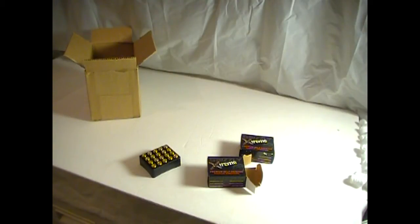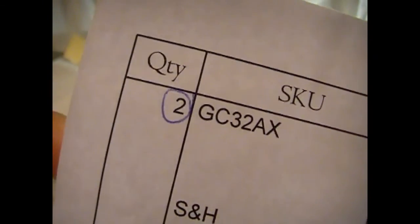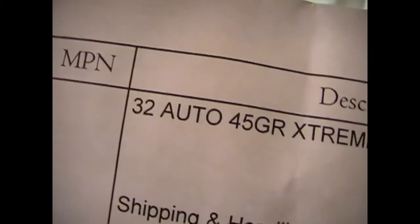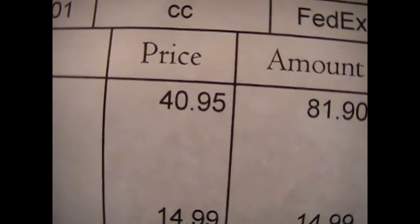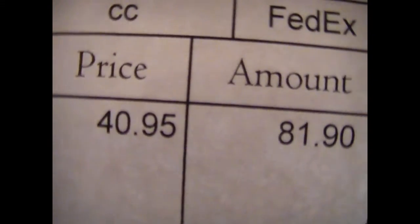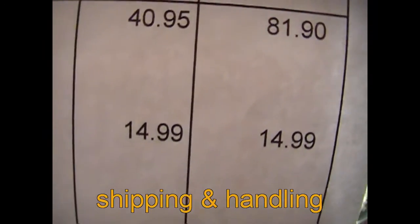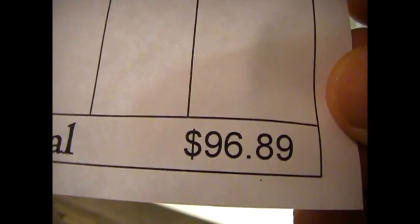And this stuff is by no means inexpensive from what I recall. Two boxes, 32 auto, 45 grain Xtreme, $40.95 a box. So that's over $2 a shot for a grand total of $81.90 plus tax and you're talking about $96.89 for 40 rounds of ammo.